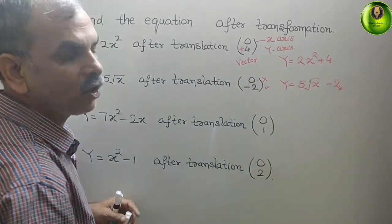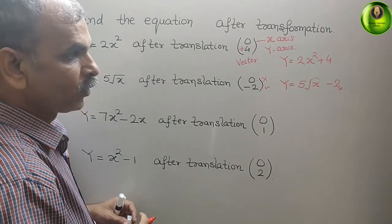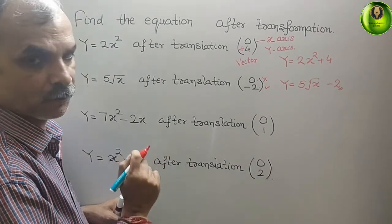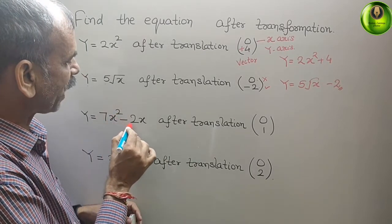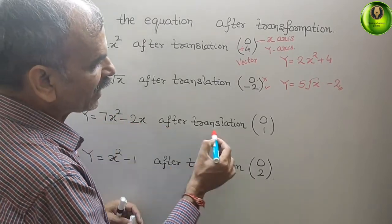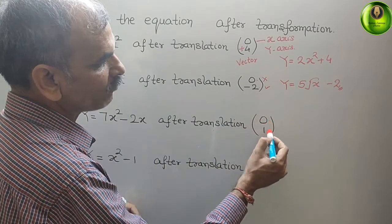So this is your equation now. Comes to your third one: y = 7x² - 2x after translation (0, 1).